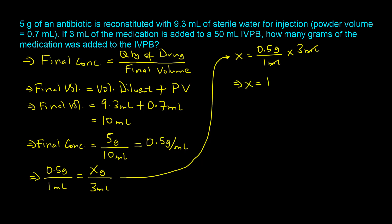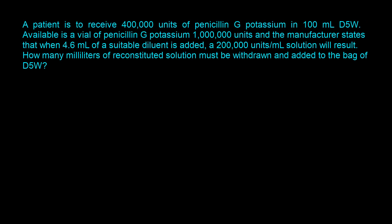Now that the final concentration is 0.5 grams per milliliter — meaning 0.5 grams of antibiotic in each milliliter — we set up a proportion to find how many grams are in 3 milliliters. X equals 0.5 grams divided by 1 milliliter times 3 milliliters, so X equals 1.5 grams.